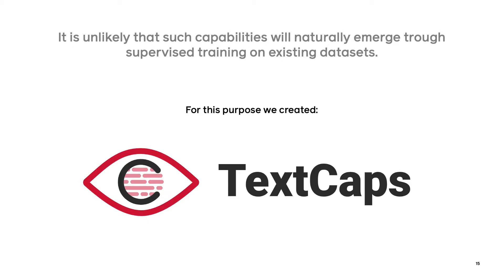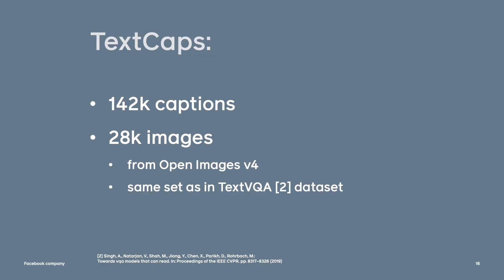We think it's naïve to expect that such capabilities will emerge by themselves from existing data. So for that purpose, we created TextCaps. We collected and annotated more than 140,000 captions for 28,000 images. The original images were taken from the OpenImages dataset and were filtered to those which contained text in them. We used the same images as in the TextVQA dataset to enable knowledge transfer experiments.